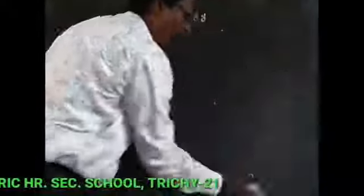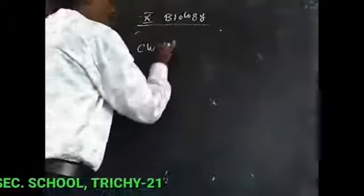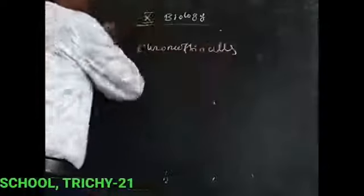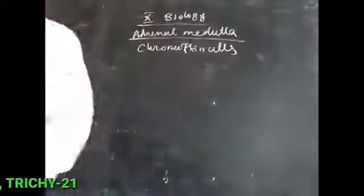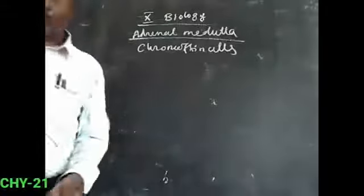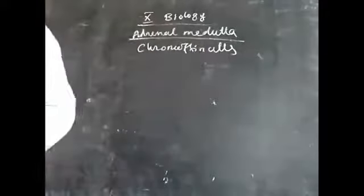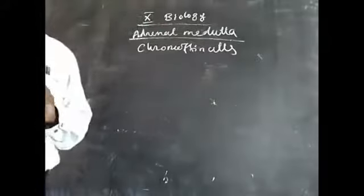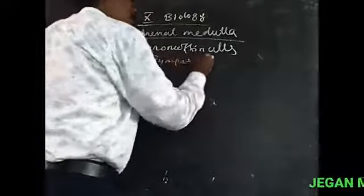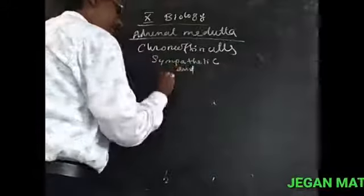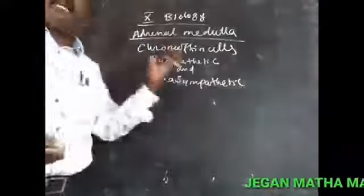The next part is called the adrenal medulla. The adrenal medulla is composed of chromaffin cells, is highly rich in blood vessels, and is associated with the sympathetic and parasympathetic nerve system.